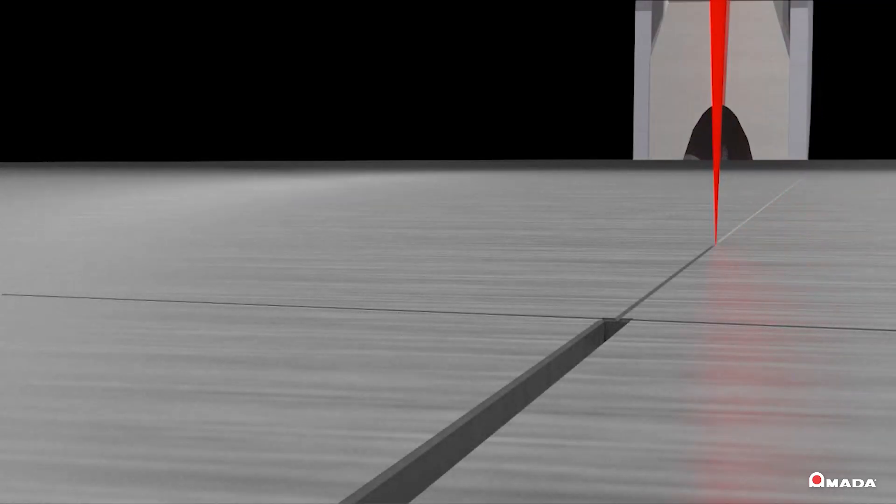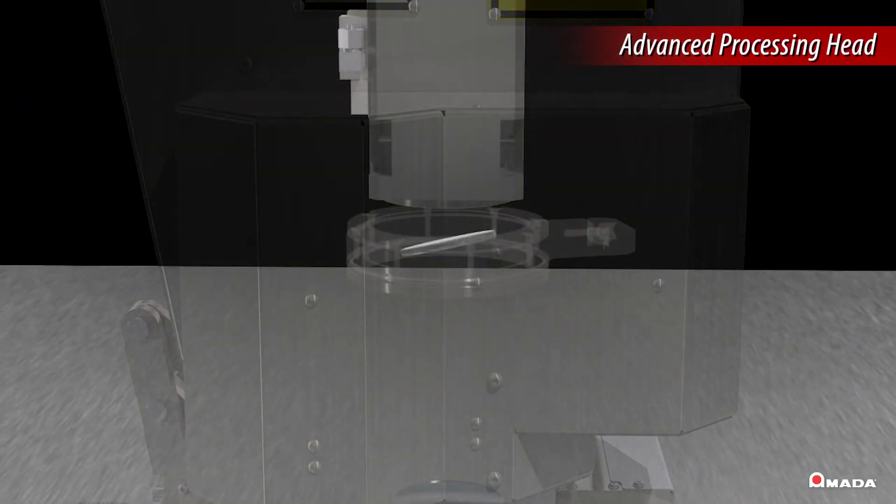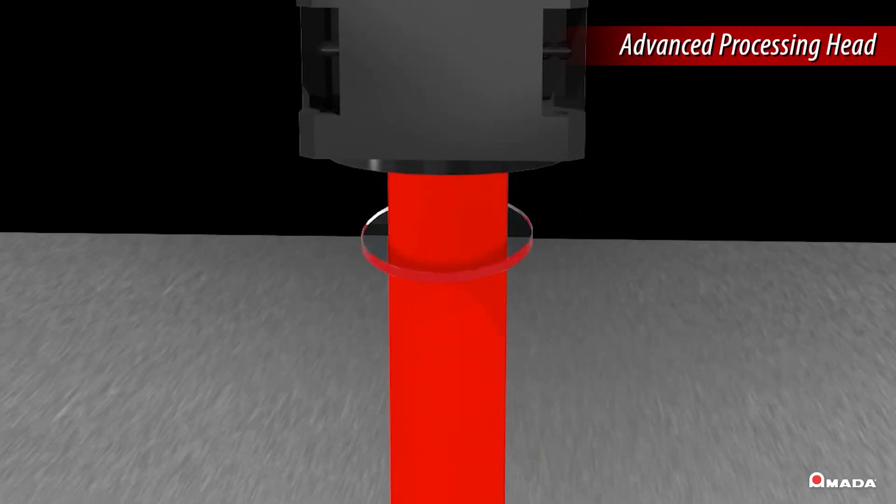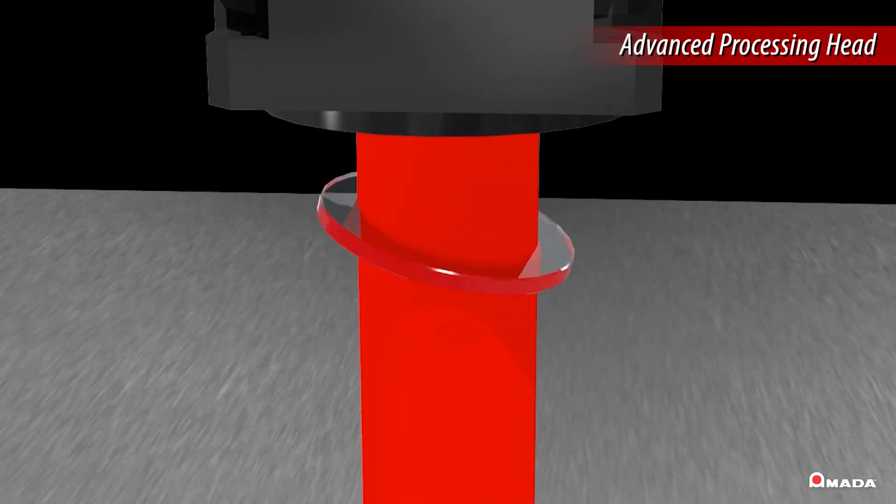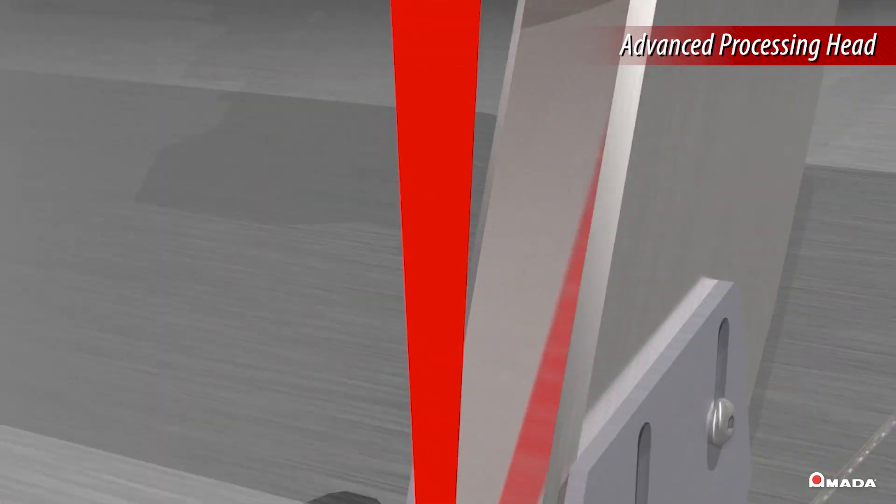Another key processing feature is the Amada patented rotating lens. This unique lens rotates the fiber laser beam as the robot is welding and is following a direct path to travel. This allows parts with large gaps and filler feeding to be processed efficiently.